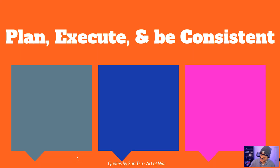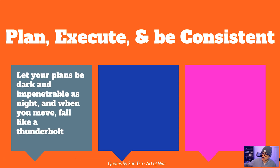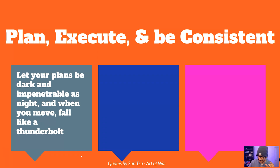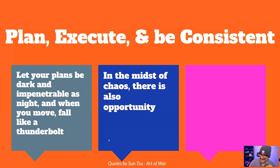For the last slide: plan, execute, and be consistent. I put together some quotes from Sun Tzu that I think really apply to yield farming. Here's the first one: 'Let your plans be dark and impenetrable as night, and when you move, fall like a thunderbolt.' That means plan out what you're going to do, waiting for that right opportunity — and when it comes, you strike without fail. And the next: 'In the midst of chaos, there is also opportunity.'